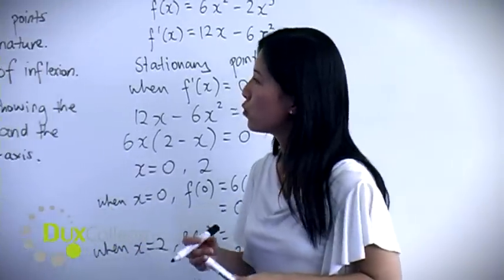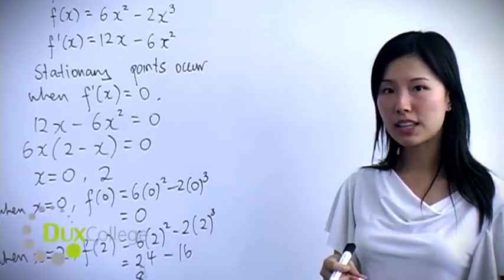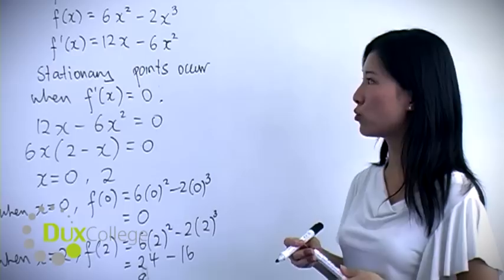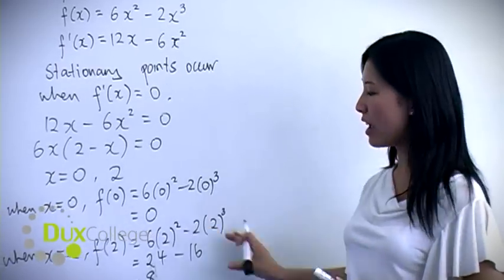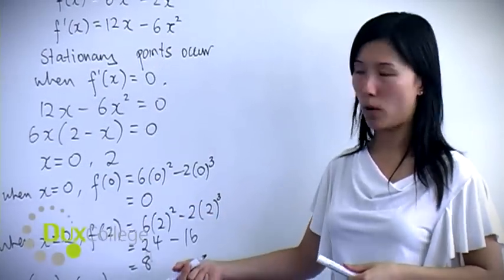The next thing you need to do is determine the nature. Now for this particular question, it's easier if you use the second derivative to determine the nature, although you can also use the first derivative table to test the gradient to the left and to the right of each stationary point.